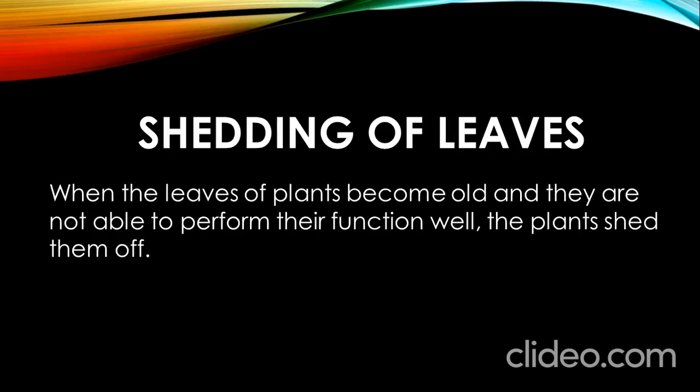When the leaves are not able to prepare food for the plants, you must have seen that the leaves become dry and are usually of yellow or brownish-yellow color. This means that chlorophyll is not present. As you know, chlorophyll is the green color pigment in the leaves.